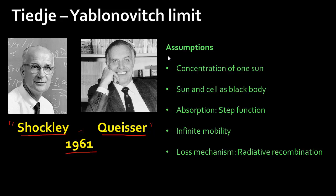This was published in 1961, but they made certain assumptions which were fine back then, as it was one of the first works calculating this fundamental efficiency limit. However, these need to be corrected in the current light of things. A few of the assumptions that need correcting: they assumed that the sun and the cell were ideal black bodies.